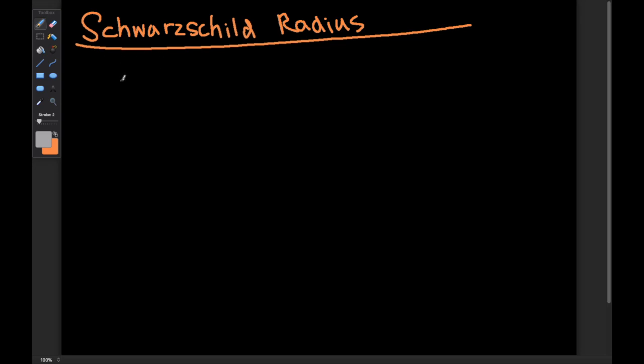So the first thing we want to do here is write down the force for Newton's law of universal gravitation. So F is GMm over r squared.